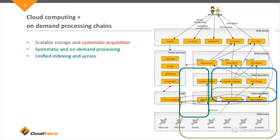The image here shows that we are constantly collecting data from various hubs: SciHub, Copernicus Hub, ECMWF, EUMETSAT — and all this data is stored in our data repository. We have about 17 petabytes of data already stored, and every day we collect several terabytes of new data from satellite products.